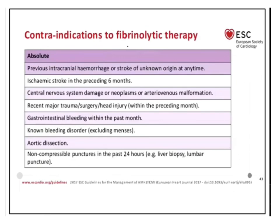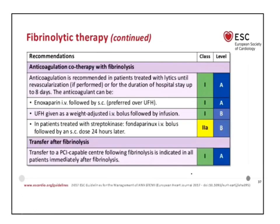Not all patients can receive fibrinolytic agents. Absolute contraindications to fibrinolytic therapy include: previous intracranial hemorrhage or stroke of unknown origin, ischemic stroke in the preceding six months, CNS damage or neoplasm or arteriovenous malformation, recent major trauma, surgery, or head injury, gastrointestinal bleeding within the past month, any bleeding disorder (excluding menses), history of aortic dissection, and non-compressible punctures in the past 24 hours (e.g., liver biopsy, lumbar puncture). In such patients, PCI is preferable.